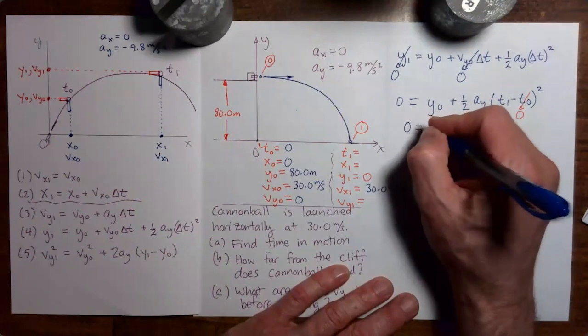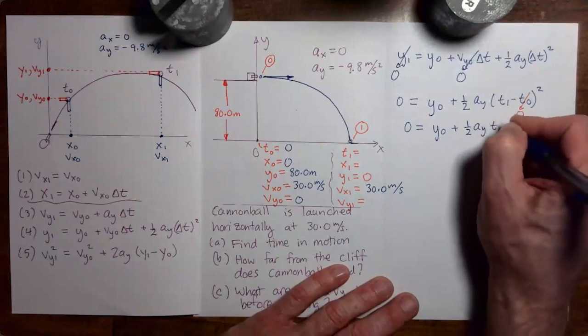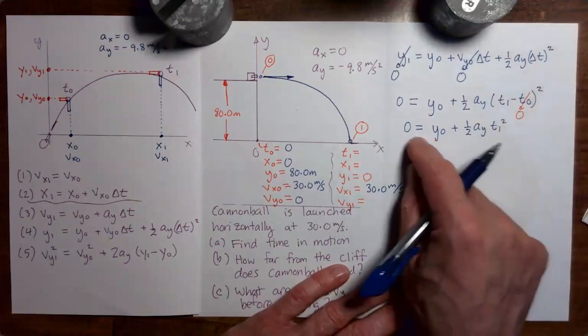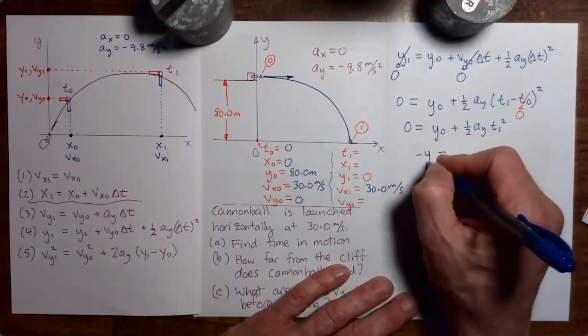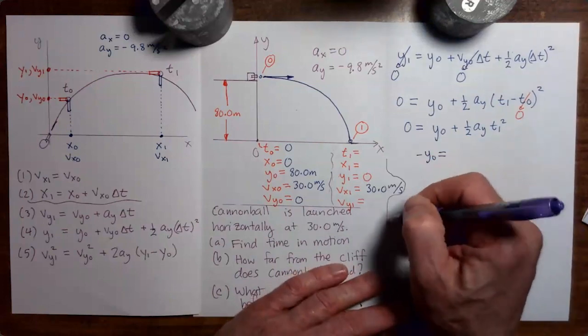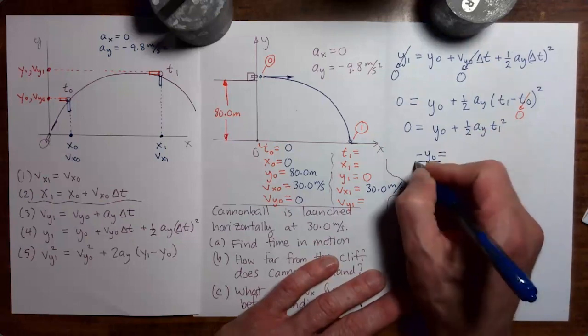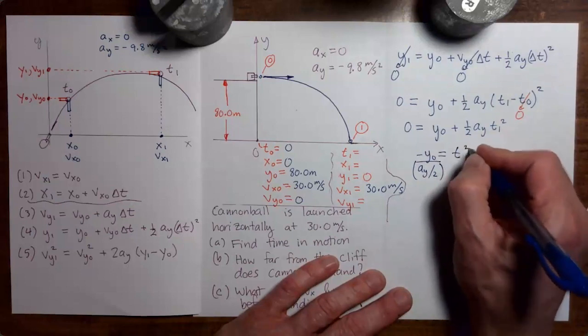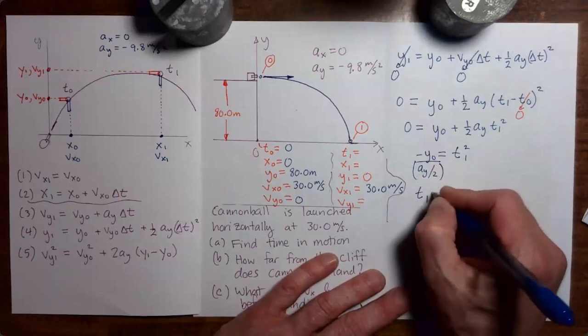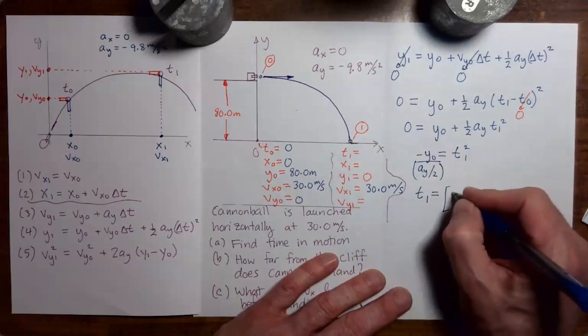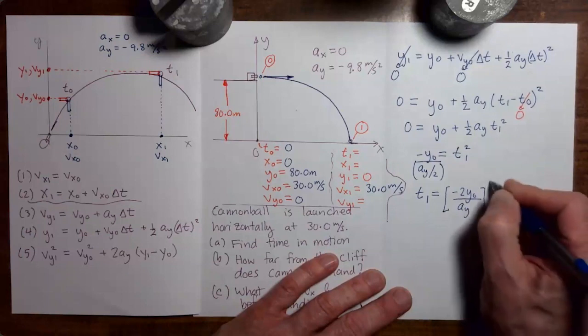Okay, so what's actually left? We have zero equals y zero plus one half ay t one squared. All right, let's solve for t one. Take y zero, put it on the other side. The minus sign, divide through by ay over two. That's equal to t one squared. So we're going to take the square root and flip sides. That gives us t one equals square root of minus two y zero over ay. All of that's square root.